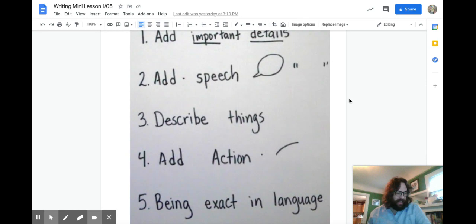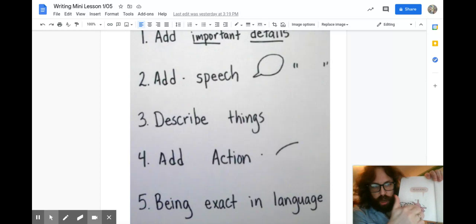A fourth thing you can do is add action. Have people do things. This line I wrote here was to remind me about the sort of action that Moe adds to his writing with the lines. Sort of like here at the start of the book we read today.